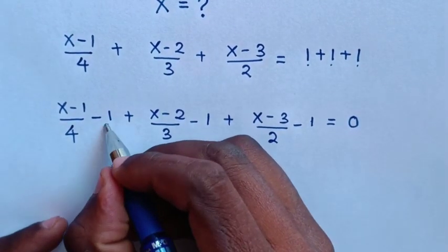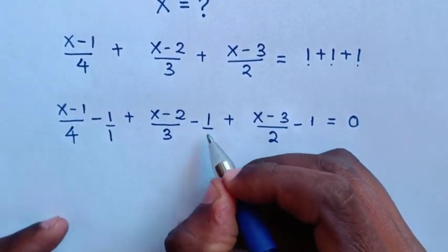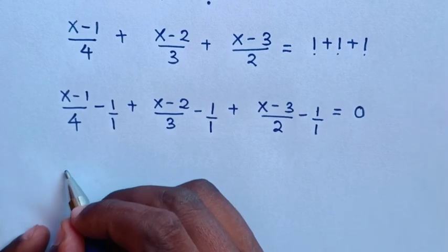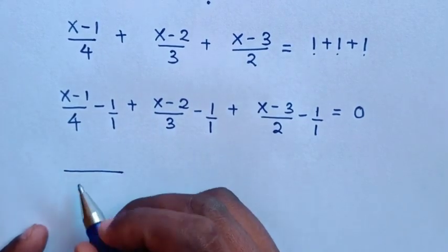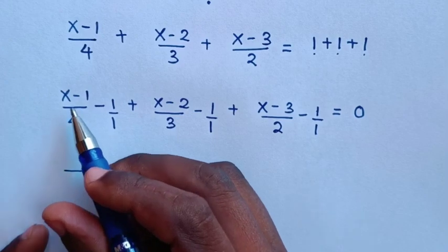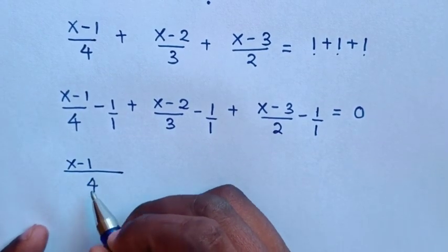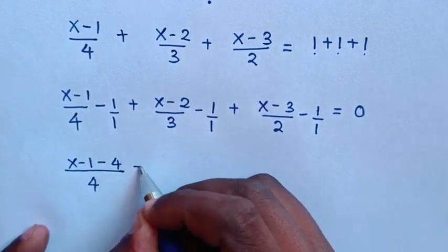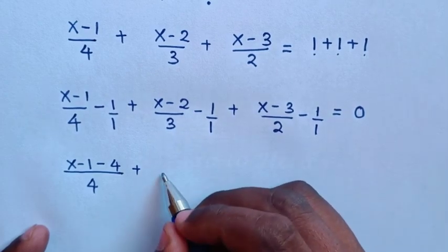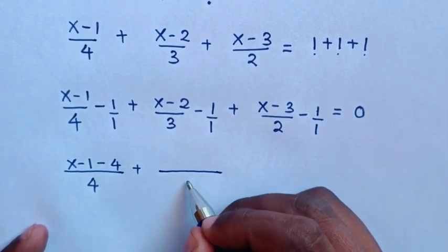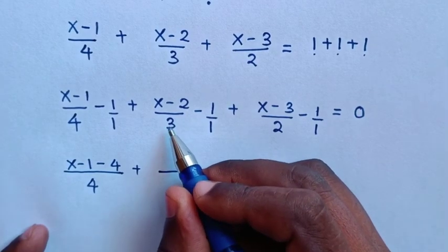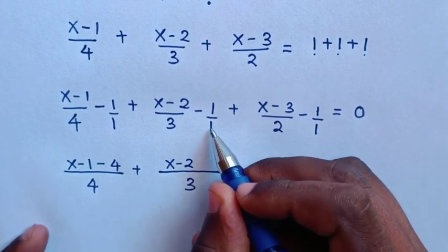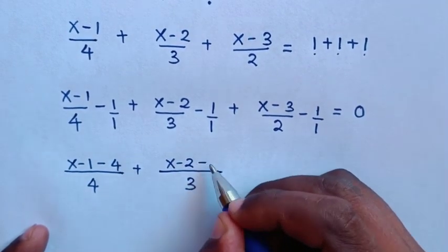Here, 1 is the same as 1 over 1. From the first part, the denominator is 4 times 1, which is 4. 4 divided by 4 is 1, times x minus 1. Then 4 divided by 1 is 4, times 1 is 4, so it will be minus 4. For the second part, the denominator is 3. 1 times x minus 2. 3 divided by 1 is 3, times 1 is 3, so it will be minus 3.